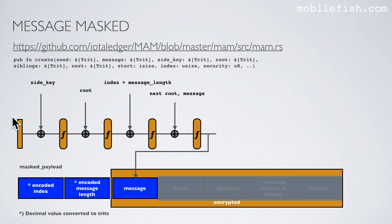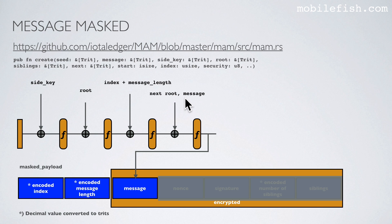This is a sponge construction. In the restricted mode, the side key is absorbed and the transformation function is applied. The root is absorbed and the transformation function is applied. The index and message length are absorbed and the transformation function is applied. The next root and message are absorbed and the transformation function is applied. This function generates the masked message consisting of the next root and the actual message.